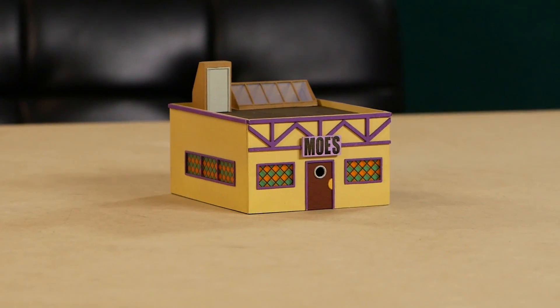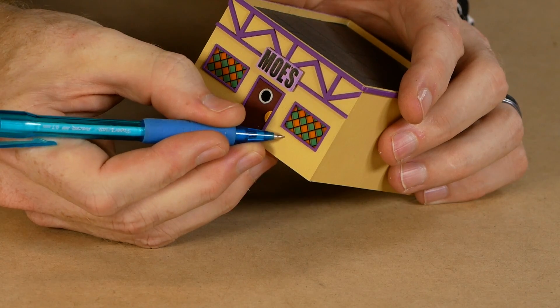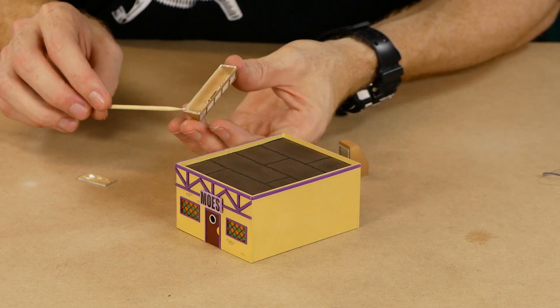We're almost done. The brick detail is simply drawn on using a pencil and the roof details are glued down.